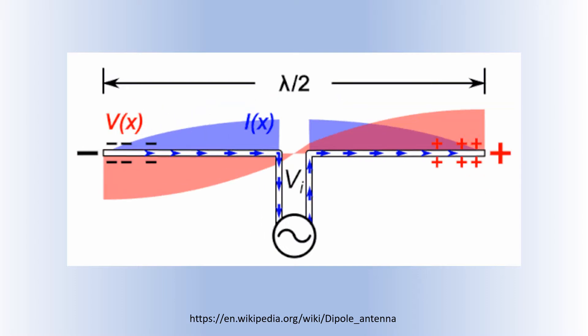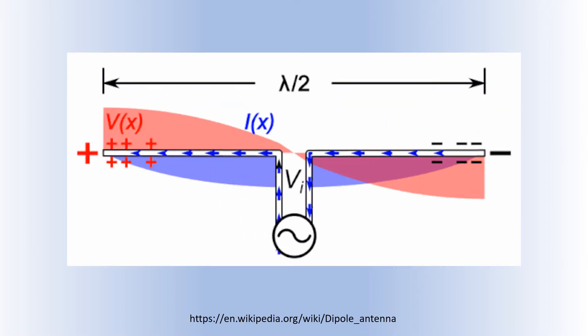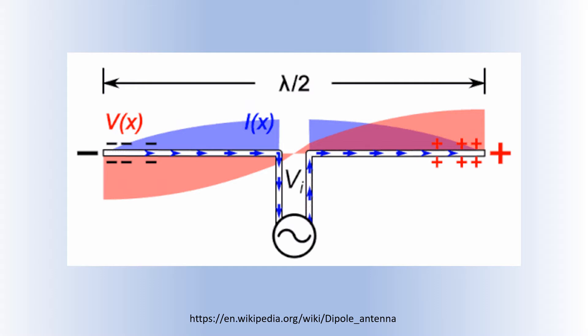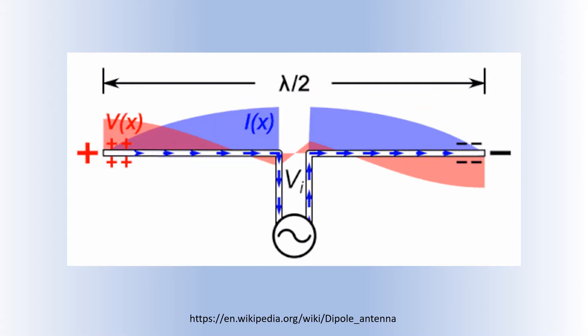Here is an animation of a transmitting horizontal half wave dipole antenna showing the voltage in red and current in blue, due to the standing wave on the antenna.